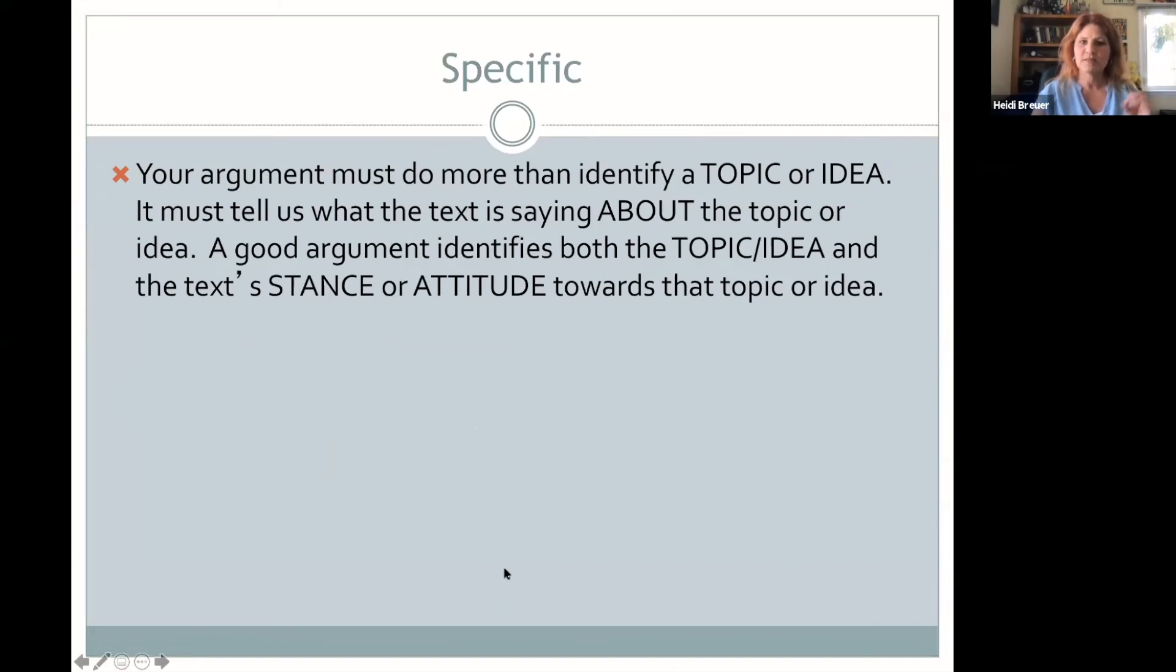It also needs to be specific. This goes back to what I said in an earlier slide. It has to do more than identify the topic. That's the thing that we most naturally first see because it's like, what's the story about? The answer is going to be a topic: love, family, friendship. Those are things that a story is about, but we need to know what claim the text is making about the topic. What is the text saying is true about love or friendship or, you know, insert topic here?